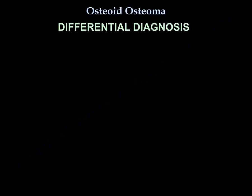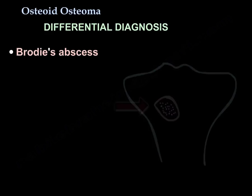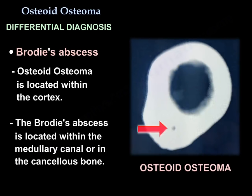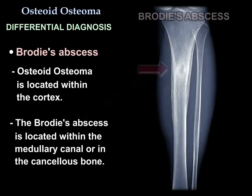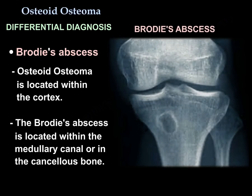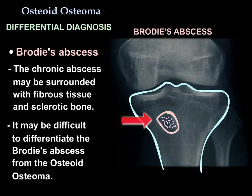Regarding differential diagnosis, consider Brodie's abscess. Osteoid Osteoma is within the cortex, whereas Brodie's abscess is in the medullary canal or cancellous bone. A chronic abscess may be surrounded by fibrous tissue and sclerotic bone, making it difficult to differentiate from Osteoid Osteoma.